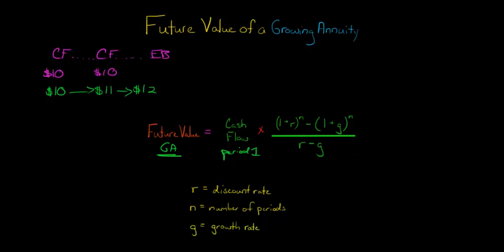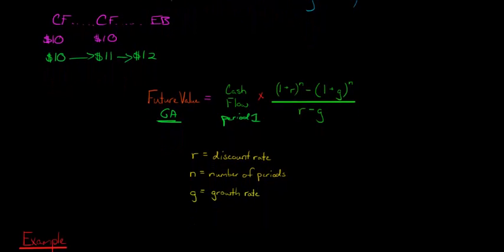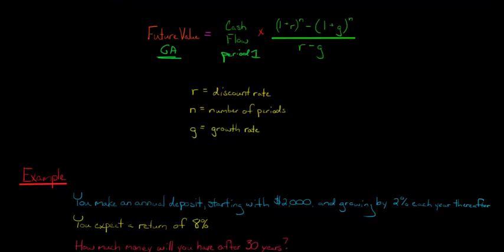Again, for the savings example I'll give you, the discount rate would be the rate of return that we're earning on our savings account, our investment account, and the growth rate is the amount by which the cash flows that we're putting into the account are changing. I hope that's clear. Let me show you an example.